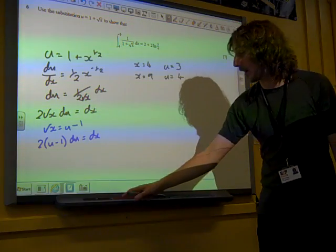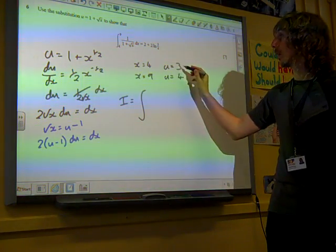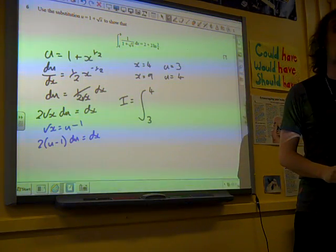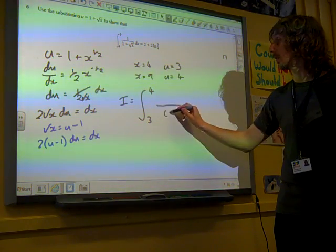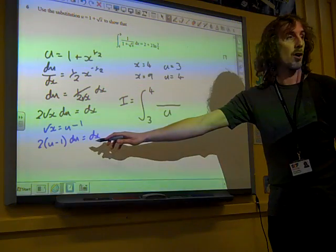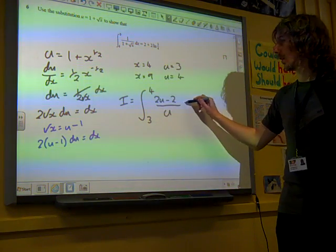So we're ready to change the integral. We've got this as being now the integral from 3 to 4. I'm replacing 1 plus root x with u.